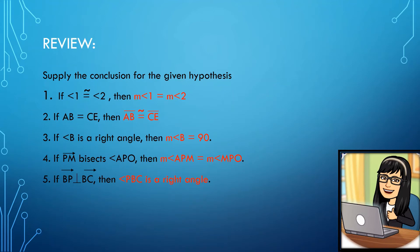Number three: if angle B is a right angle — what will be your clue? It is right angle. From the definition, a right angle measures exactly 90 degrees. So your conclusion would be: measure angle B is equal to 90 degrees.